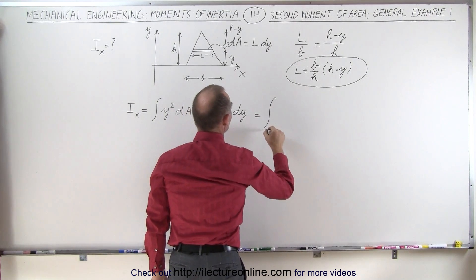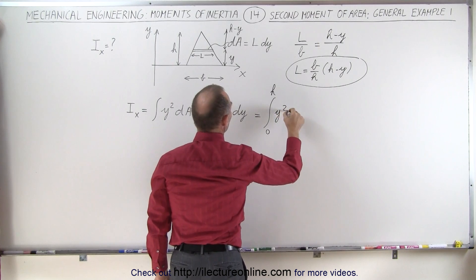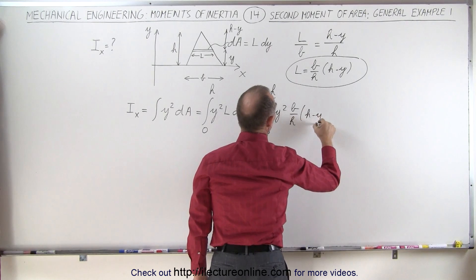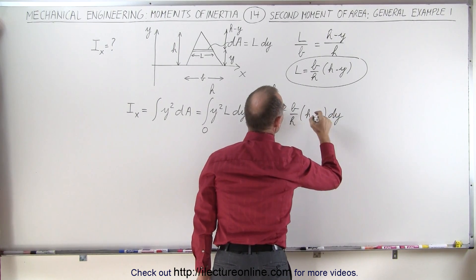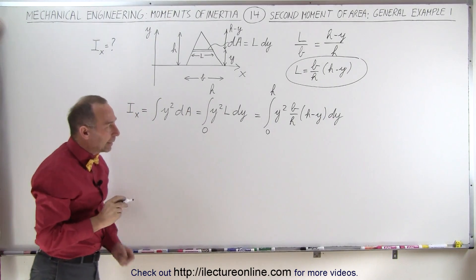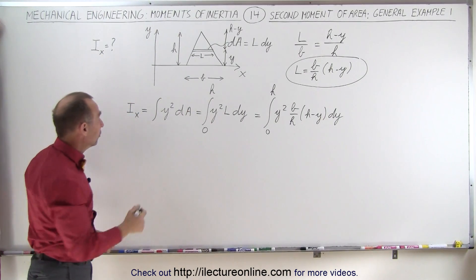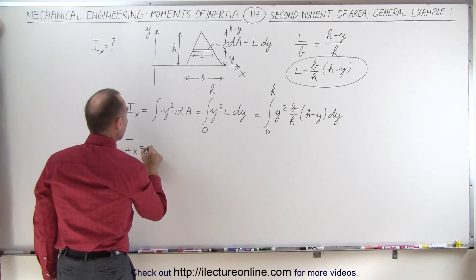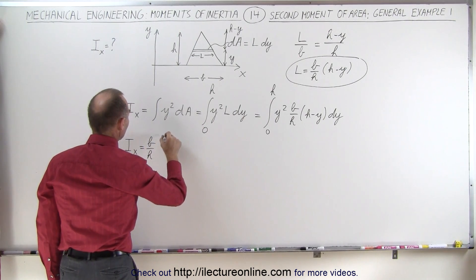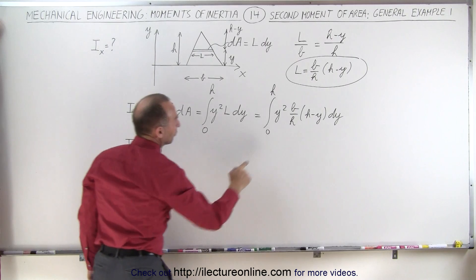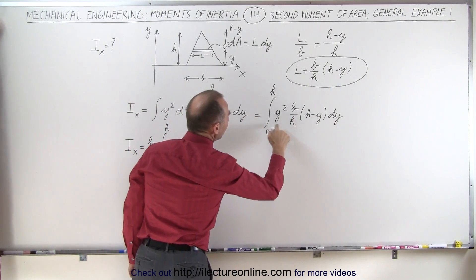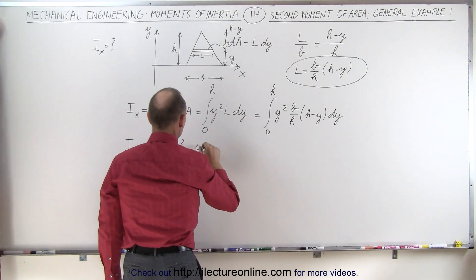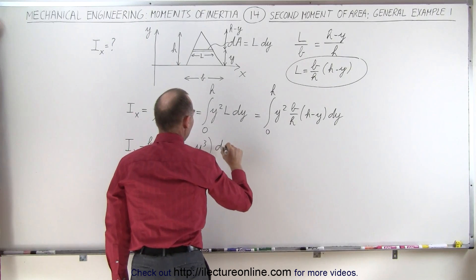That means that this can now be written as the integral from 0 to h of y squared times b over h times h minus y times dy. It is a minus here. All right, now we can take b over h out, because those are constants, so the second moment of area with respect to the x-axis is equal to b over h times the integral from 0 to h of h times y squared minus y cubed. And the whole thing multiplied times dy, our differential.